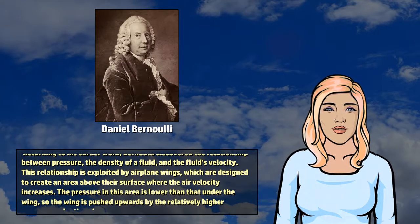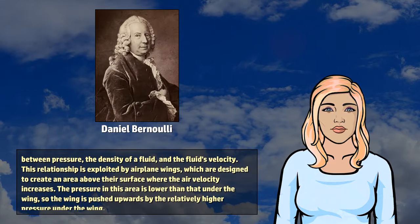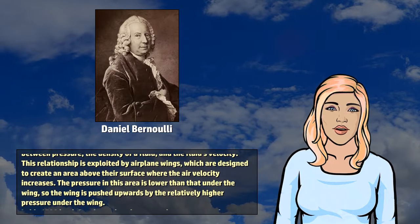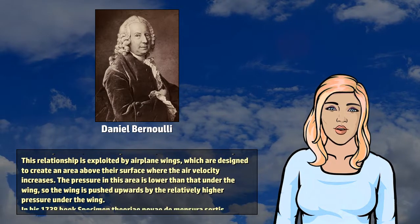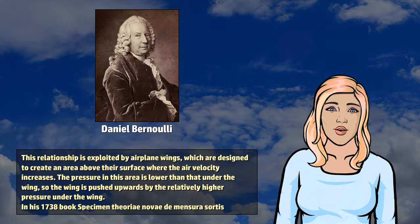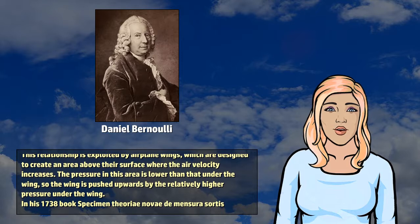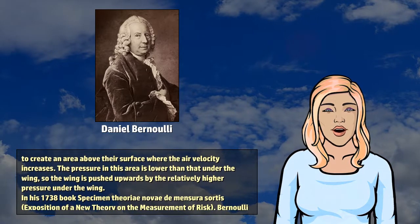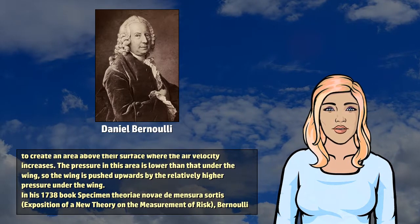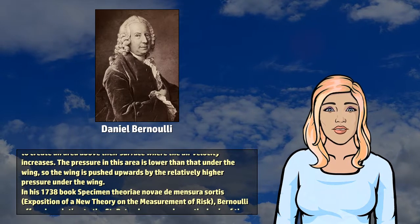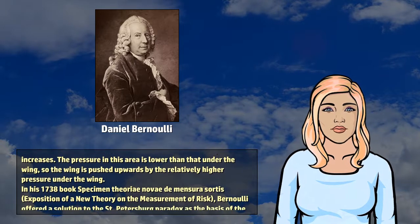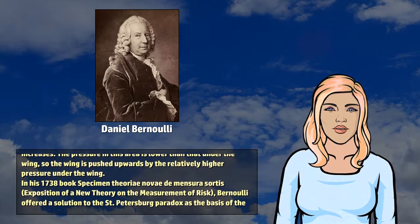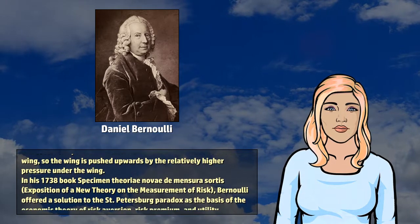This relationship is exploited by airplane wings, which are designed to create an area above their surface where the air velocity increases. The pressure in this area is lower than that under the wing, so the wing is pushed upwards by the relatively higher pressure under the wing.